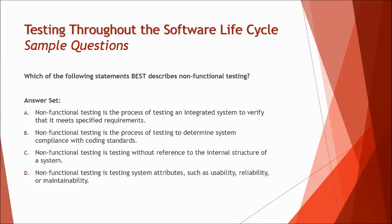Option A: non-functional testing is the process of testing an integrated system to verify that it meets specified requirements — that's more about system testing or functional testing. Option B: it's the process of testing to determine system compliance with coding standards — that relates to static analysis, not non-functional testing. Option C: testing without reference to the internal structure of a system — that describes black box testing. Option D: testing system attributes like usability, reliability, or maintainability — that's where we get the straightforward answer for non-functional testing characteristics.